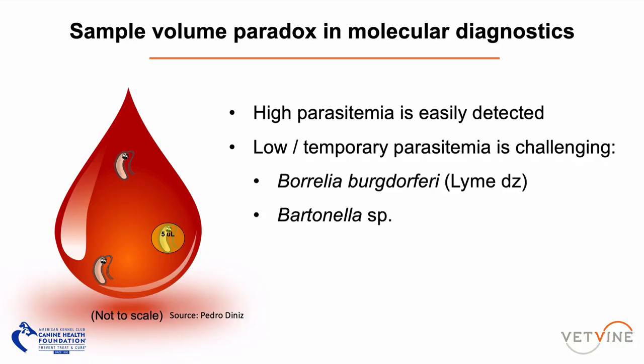A great example is Borrelia burgdorferi PCR. No one can recommend a blood PCR for Lyme disease nowadays because the spirochetes stay in circulation for only a limited time, then migrate to the tissue — really moving out of the capillaries and through the tissue. That's why we see clinical signs in joints, kidneys, etc. The best PCR for Lyme is a tissue biopsy of the bull's-eye lesion, because that's where the spirochetes are migrating. Blood PCR for Lyme is not a good diagnostic tool, but skin biopsies are excellent.